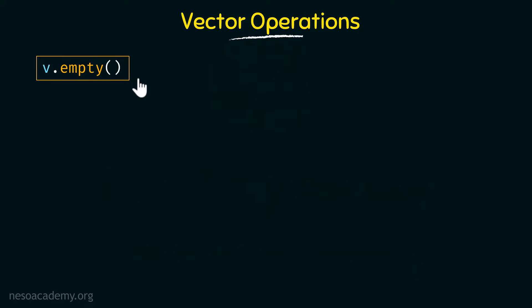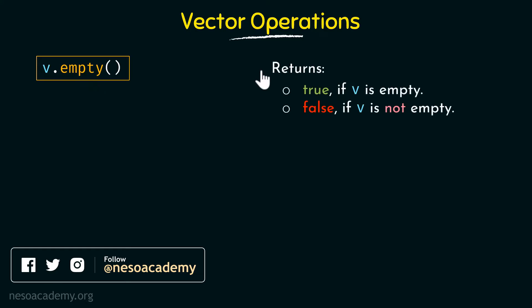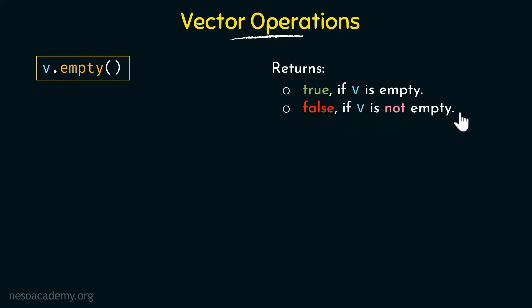Firstly, we have the empty operation. The syntax is v.empty(), where v represents the name of the vector, followed by the dot and then the empty operation. What this does is it returns true if v is empty and returns false if v is not empty. This is basically used to check whether a vector is empty or not.